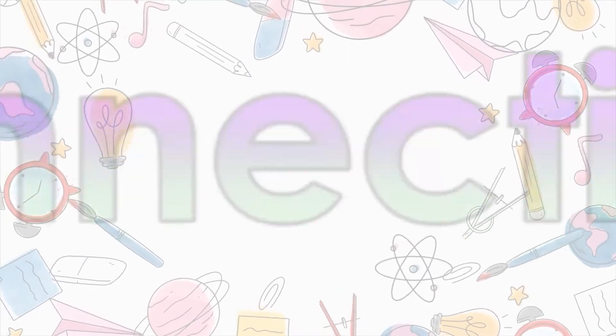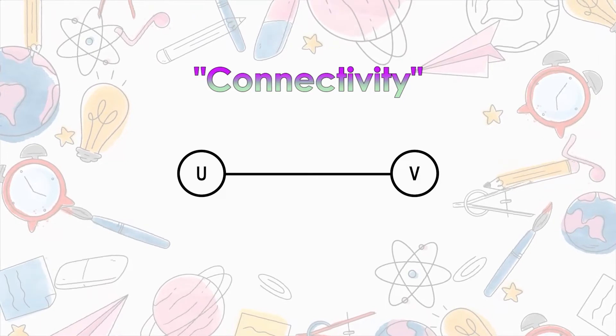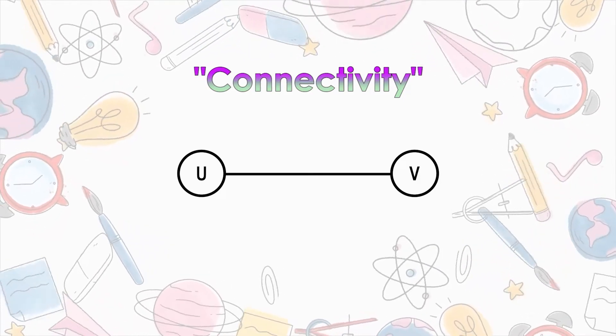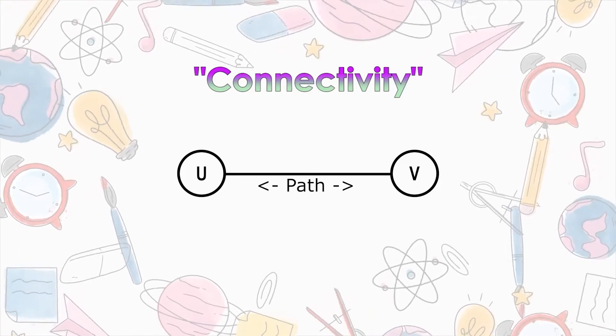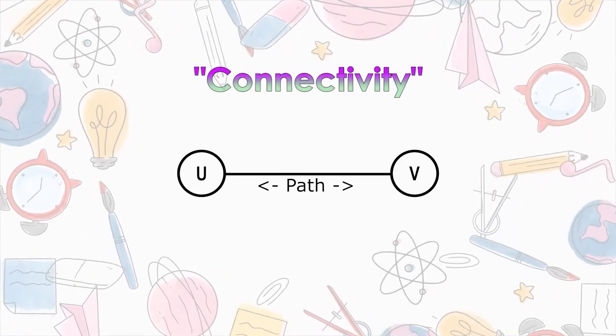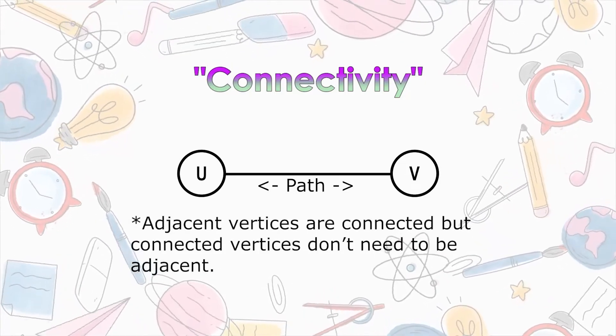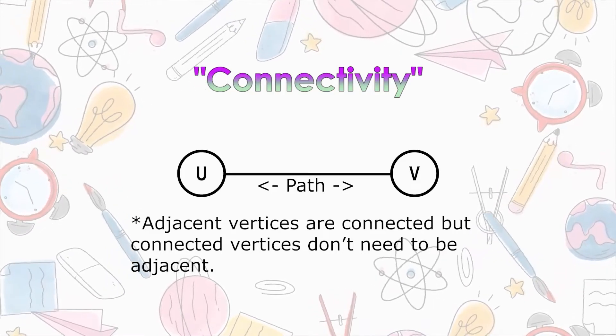In graph theory, there are fundamental concepts, one of which is connectivity. For a non-empty graph G, two vertices U and V are said to be connected if there is a path in G. If this happens, we can say that U is connected to V. Reminder, adjacent vertices are connected but connected vertices don't need to be adjacent.